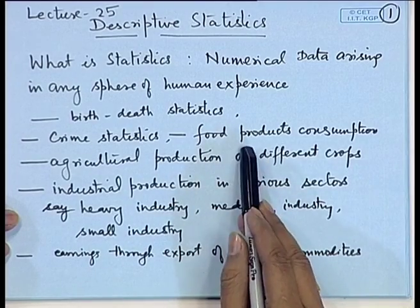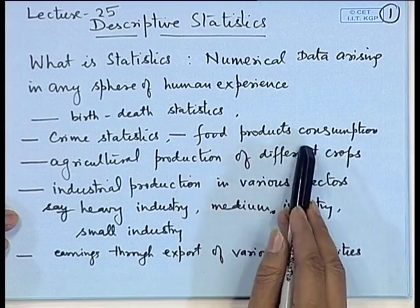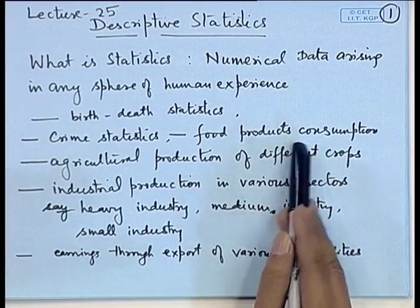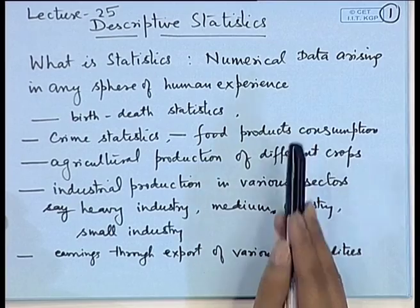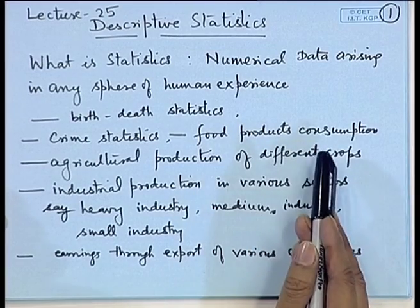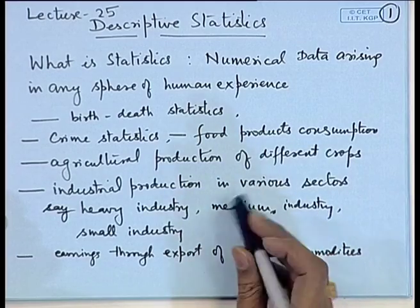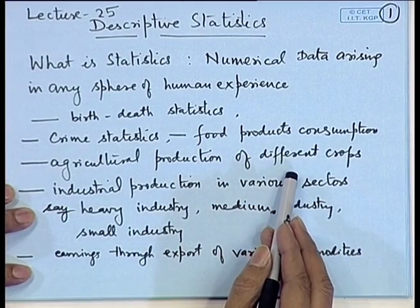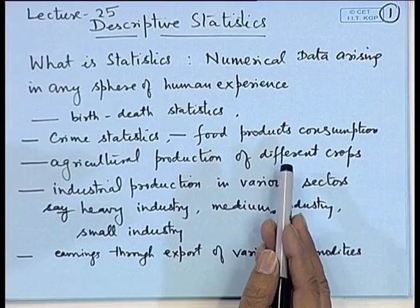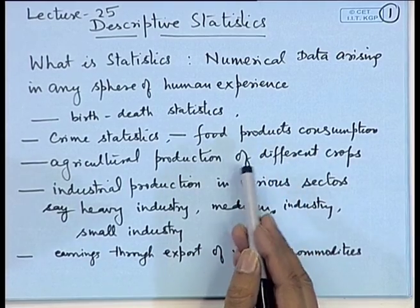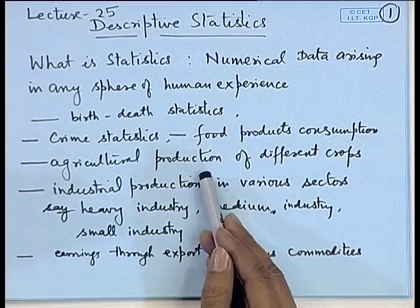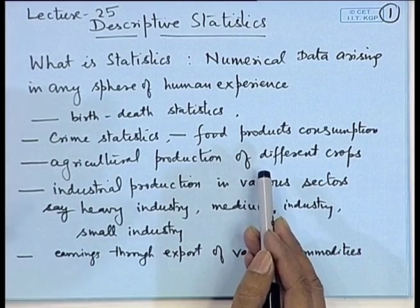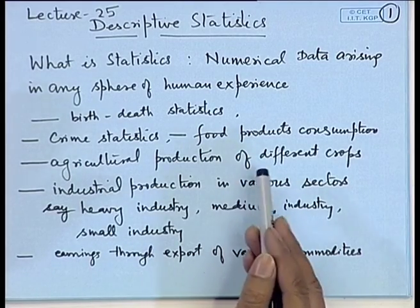A certain market may keep record of the consumption of food products of various types — for example, what is the market for South Indian dishes or Chinese dishes. The data on that comes under food product consumption statistics. Government regularly keeps the record of agricultural production of different crops: how much production there is for wheat, rice, pulses. This type of information is extremely important for making policies by the government.